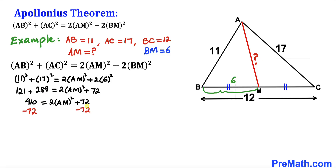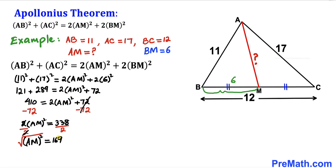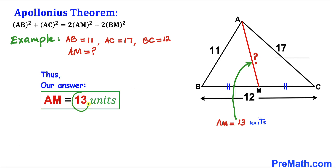Subtracting 72 from both sides: 2·AM² = 338. Dividing both sides by 2: AM² = 169. Taking the square root of both sides: AM = 13 units. So the median length AM is 13 units using Apollonius' theorem.